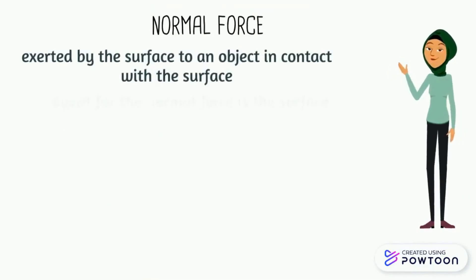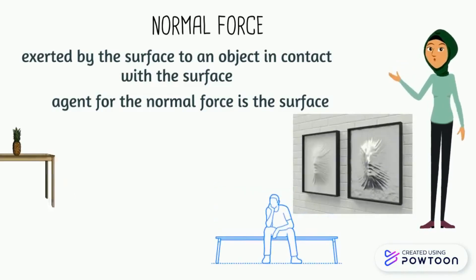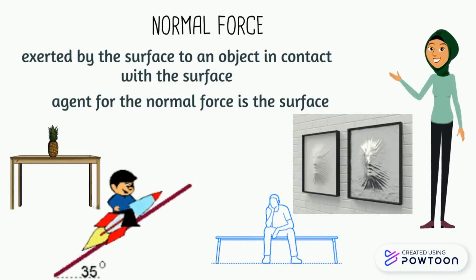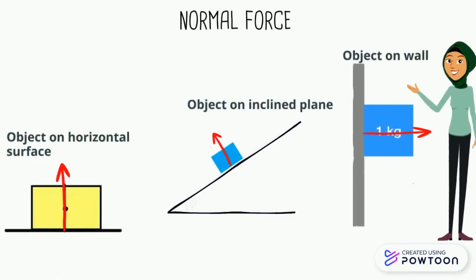Thus, the agent here is the surface. Indirectly, any two objects in contact experience normal force. The direction of normal force is drawn from the surface and directed outward of an object with the symbol capital N. It is always perpendicular to the surface.